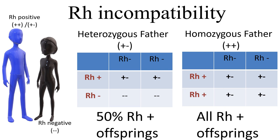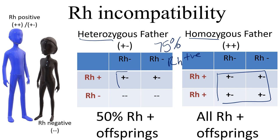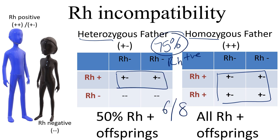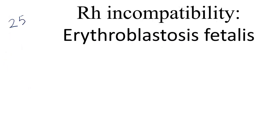Even if we don't know whether the father is homozygous or heterozygous, we can say there is a 75% chance the offspring will be RH positive — that is 6 out of 8 possible outcomes. In 25% of cases the RH negative mother will conceive an RH negative child, and in this condition there are no issues at all.